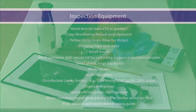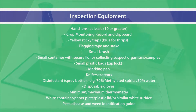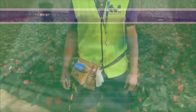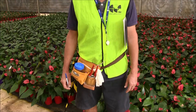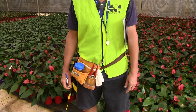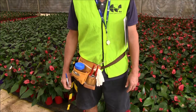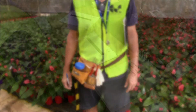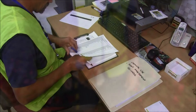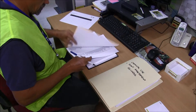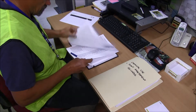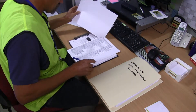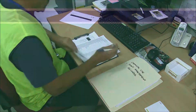A range of inspection equipment is required to perform crop monitoring efficiently. The monitoring procedure can be done more effectively by using a pouch to carry the equipment. Prior to undertaking crop monitoring activities, review the previous year's crop monitoring and site surveillance records.